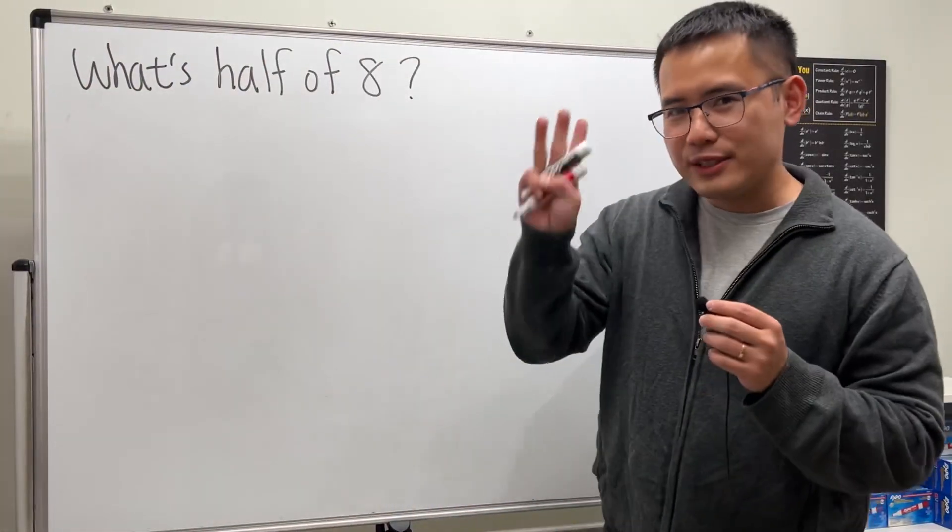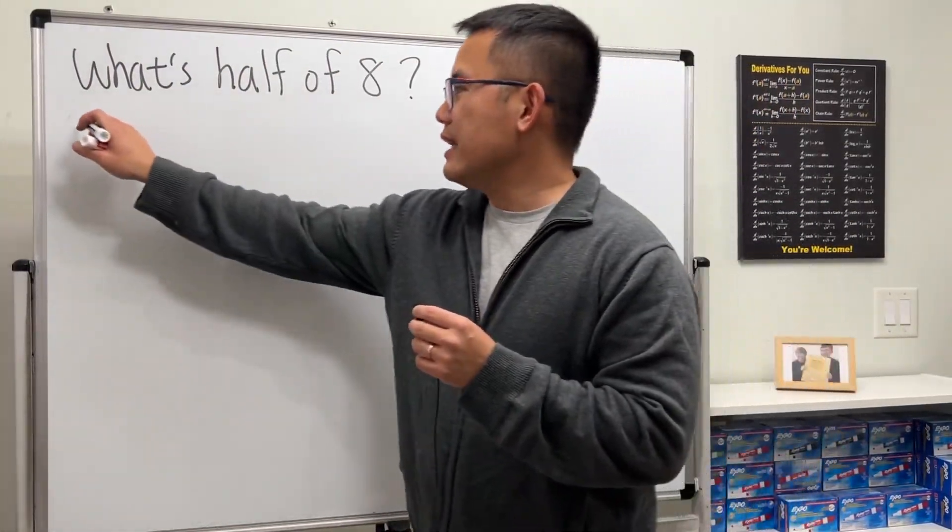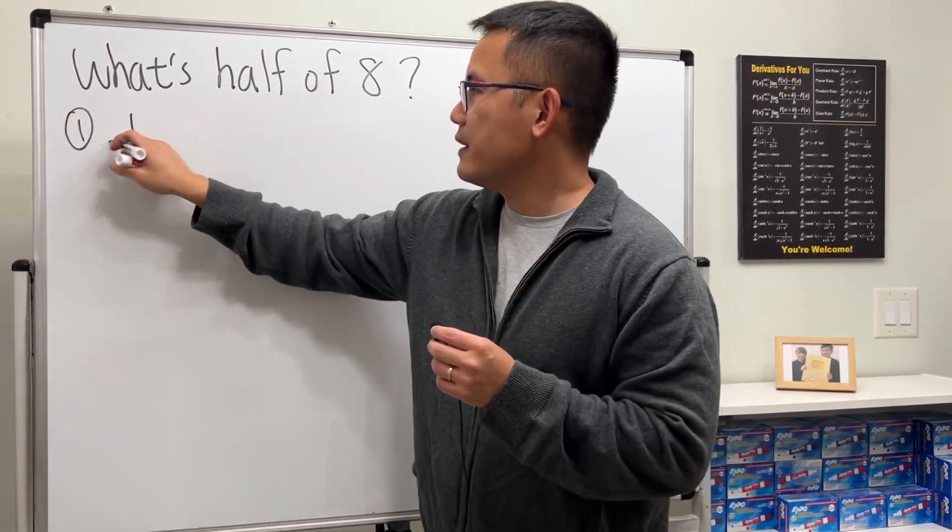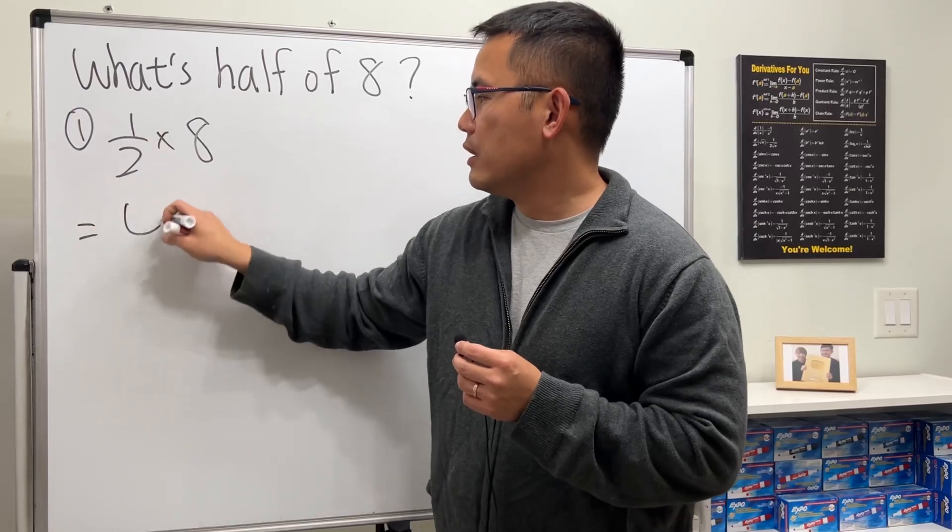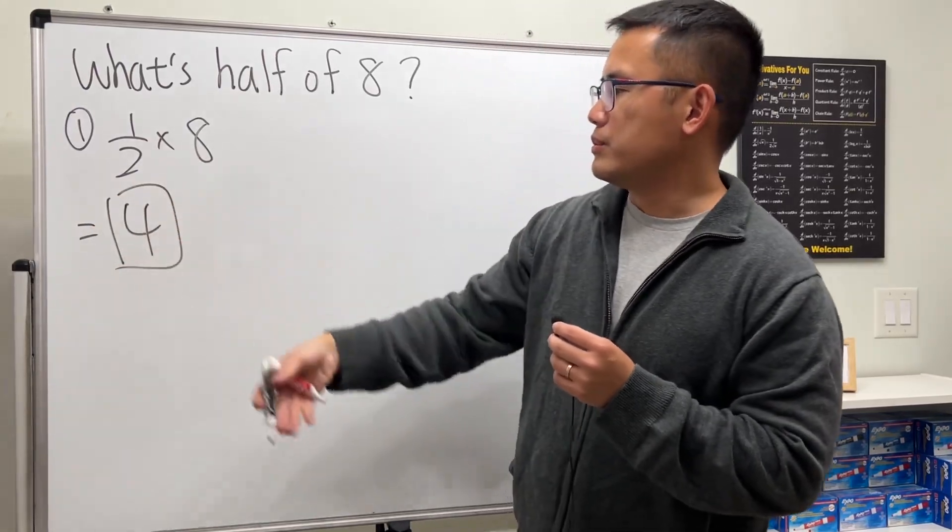Okay, so what's half of 8? I'll give you guys 3 answers, so check this out. First answer right here, of course, 1/2 and then multiply by 8, do the math, and we will end up with 4, because 8 divided by 2. Done.